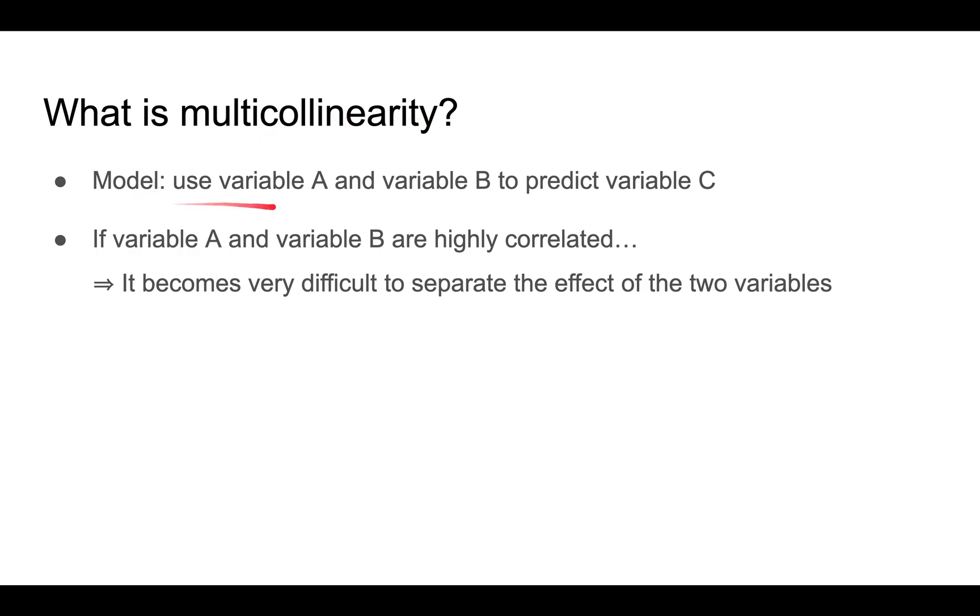Basically, if you use a model with two variables, variable A and variable B, to predict another variable, variable C, multicollinearity is a problem that happens when variable A and B are highly correlated.